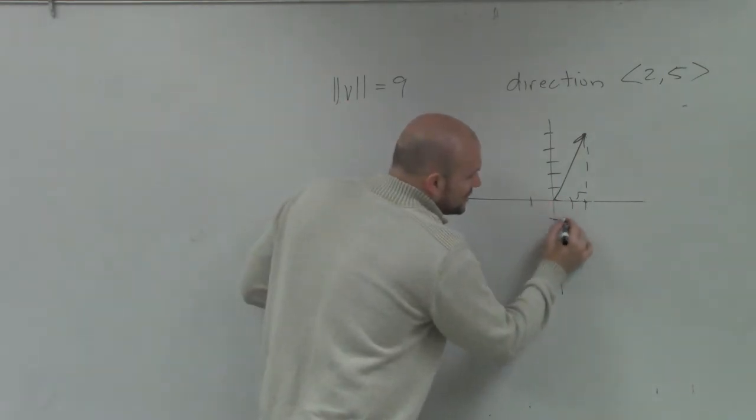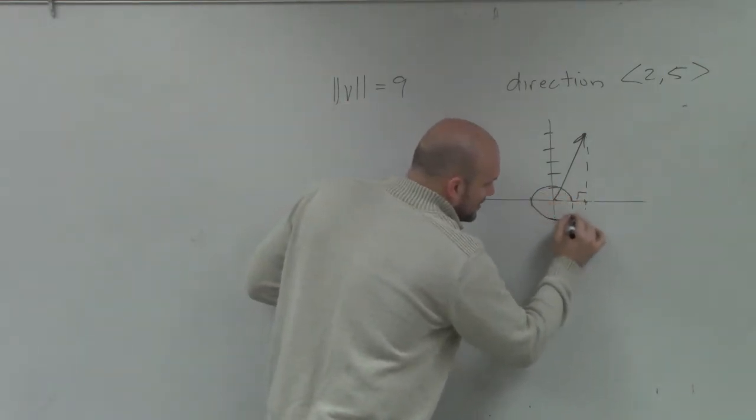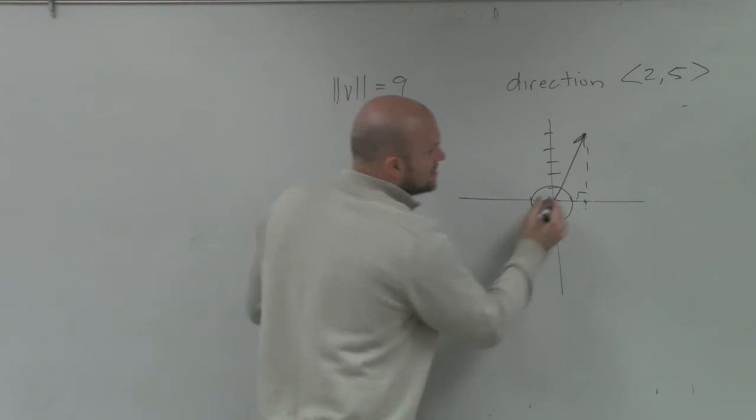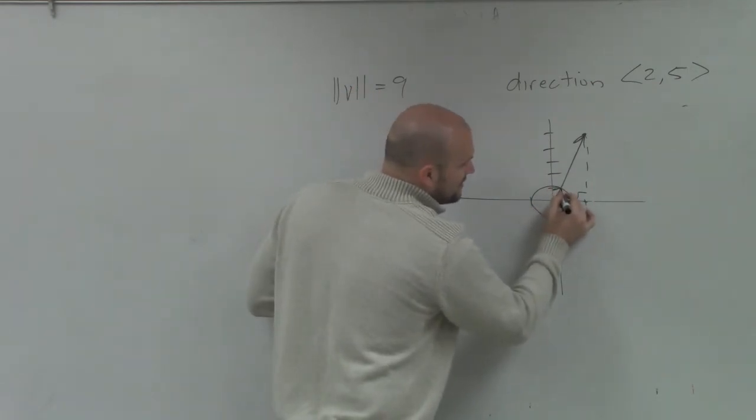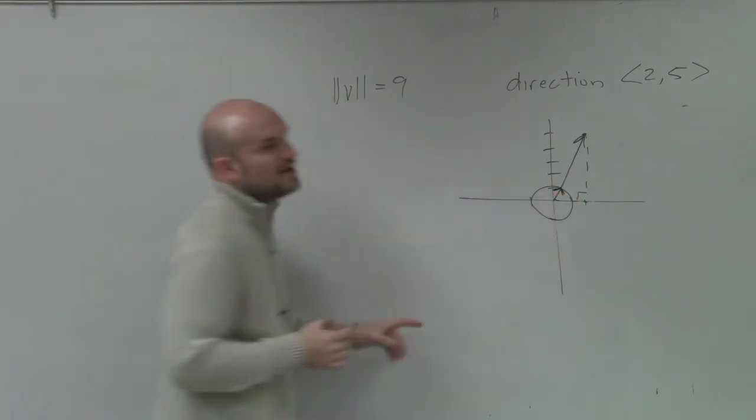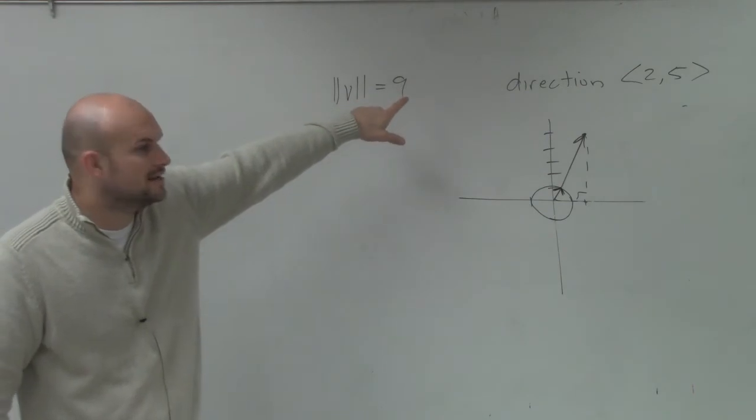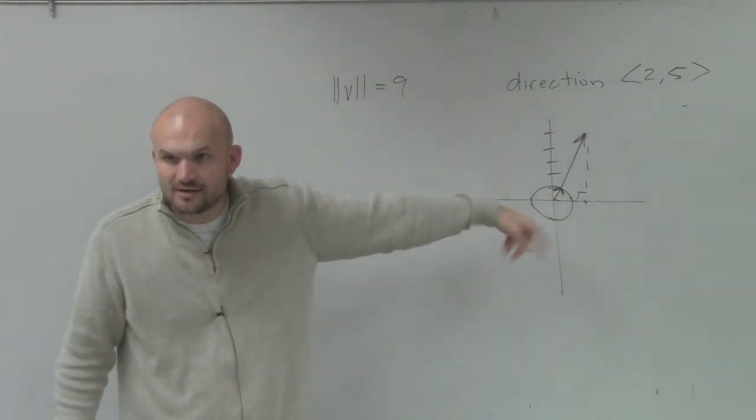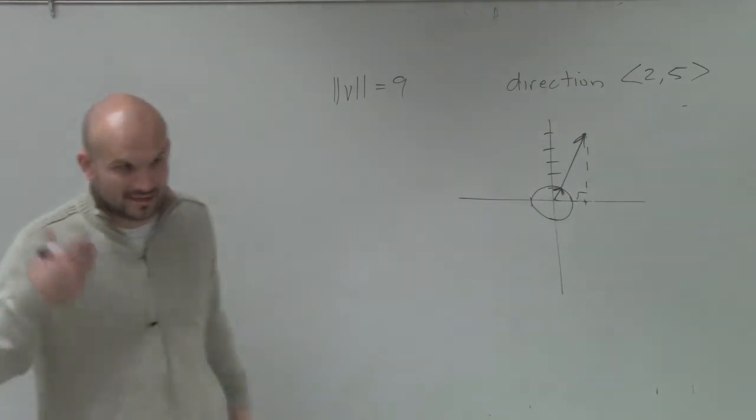So let's look at where's this cute little unit circle. Oh, right around here. Right? So let's determine what this unit vector is. Because it says we want to draw a vector that has a magnitude of 9, but that's the same direction as this, right? So let's figure out what the unit vector is. Hence, your old homework quiz.